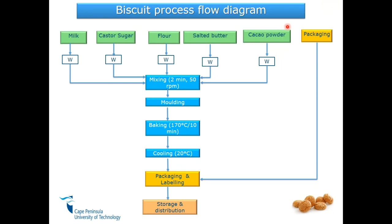After weighing your ingredients, you go and weigh them in. In the pilot plant we weigh manually; in the food industry there are automated systems or machines that use what they call the SCADA principle or SCADA software, which will automatically weigh for you. In the process flow diagram for biscuit production, all ingredients have to be mixed. I can add dry ingredients first after they have been weighed, and those dry ingredients are then mixed with milk, which is a liquid. The mixing should be done for two minutes at 50 rotations per minute.